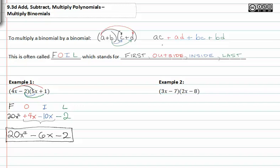Let's try example two. The first gives us 6x squared. Outer gives us negative 24x. Inner gives us negative 4x. Last gives us positive 56.